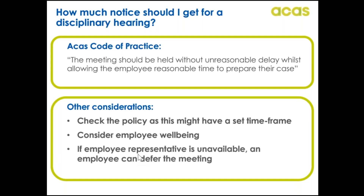If an employee would prefer to have the hearing sooner, they could request it be brought forward and the employer can decide whether to accommodate this. It's best practice that any such request is put in writing to avoid future disputes. If an employee's representative is not available on the suggested date, the employee can ask for the meeting to be held at a later date, so long as it is within a reasonable time. The ACAS code of practice states this should be within five days, though tribunals have considered that employers should not be too restrictive about this.